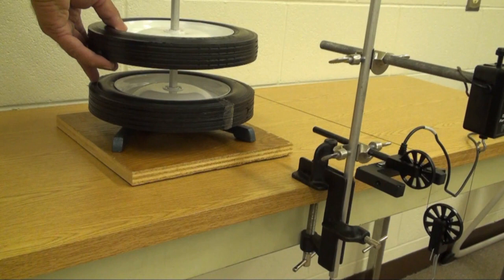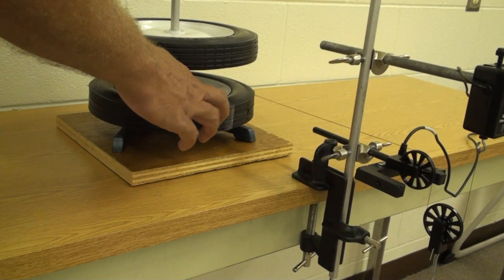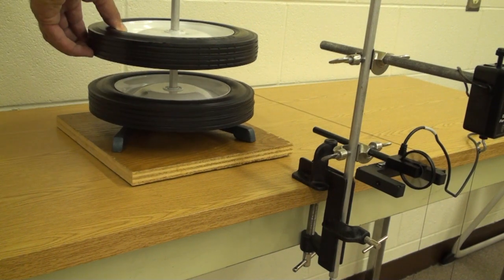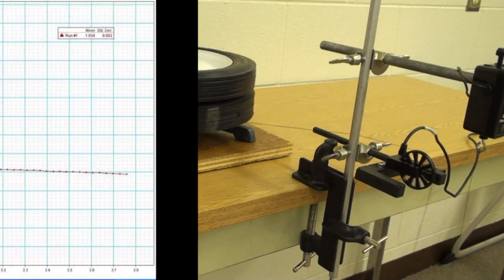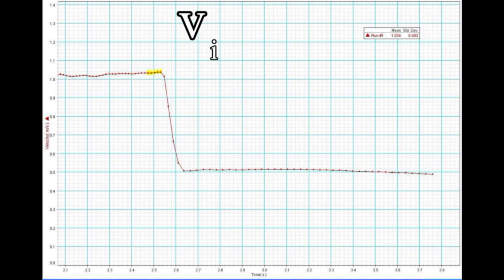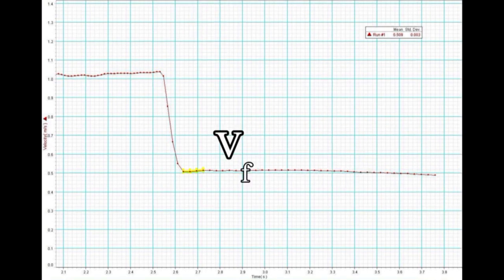Here we drop a stationary wheel onto a rotating wheel. The free pulley without weight allows the smart pulley to record the velocity of the edge of the wheel before and after the collision. The initial speed is recorded from the mean of a few values just before the collision. The final speed is recorded just after the collision. Note that the final velocity is approximately one half of the initial velocity. The angular velocities are obtained simply by dividing the tangential velocities by the radius of the wheel.